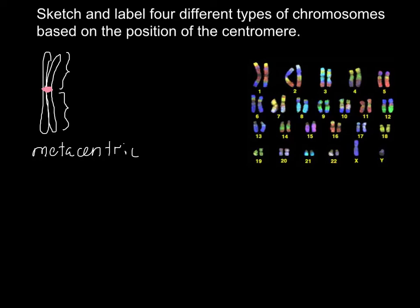Metacentric is when the two arms are equal in size — this arm is equal to the other arm. For example, chromosome number 1, 2, and 3 belong to this group, and chromosome X also.